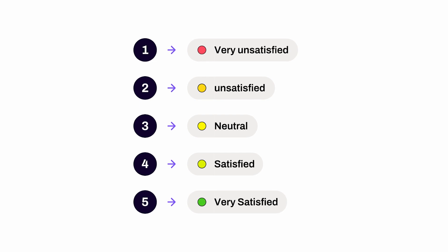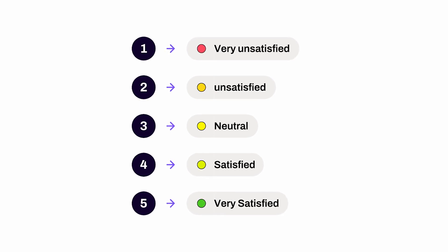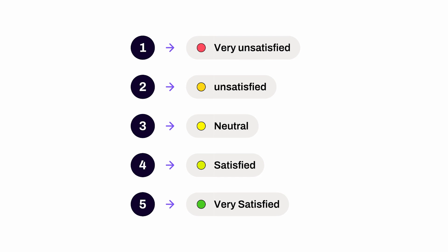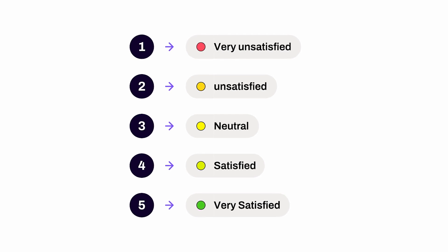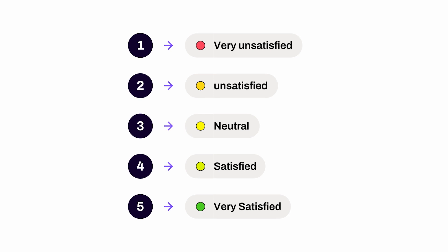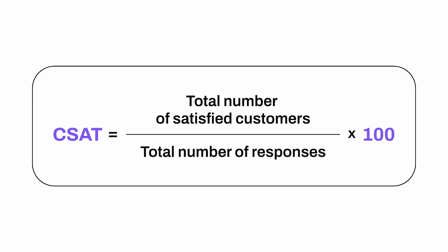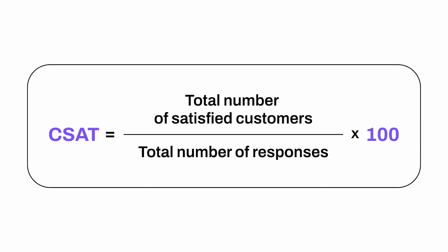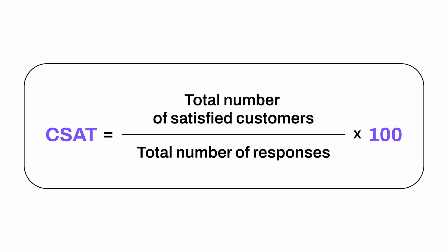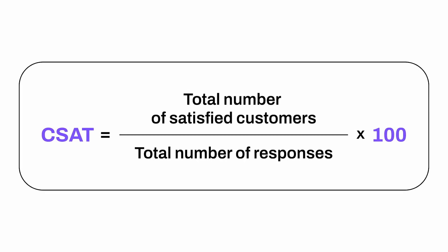Before you can calculate your CSAT score, you'll first need to survey your customers and ask them to rate their level of satisfaction with your product or service on a scale of 1 to 5, with 1 being very unsatisfied, 2 being unsatisfied, 3 being neutral, 4 being satisfied, and 5 being very satisfied. After receiving those responses, the formula to calculate your CSAT is very simple: total number of satisfied customers — those who answered 4 or 5 — divided by total number of responses, then multiplied by 100.